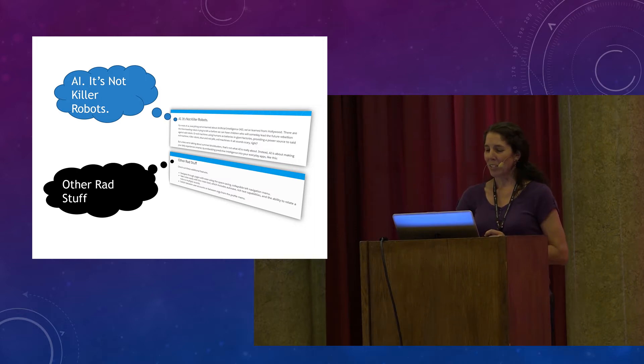But unless we're talking about summer blockbusters, that's not what A.I. is really about. Instead, A.I. is about making your daily experiences smarter by embedding predictive intelligence into your everyday apps." So this writer has managed to put a whole bunch of words that maybe are not necessarily important to the subject at hand, but make the content more interesting. It's also an example of a non-example. A.I. is not killer robots.